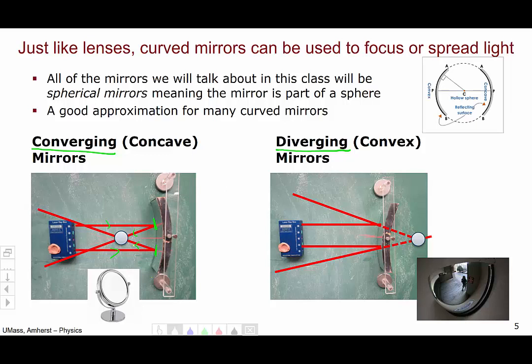When we say that the mirror is part of a sphere, here's what we mean. In this picture, we have a big sphere and we can see that the mirrors, convex on the left and concave on the right, the black line is the reflective surface, form part of this sphere.